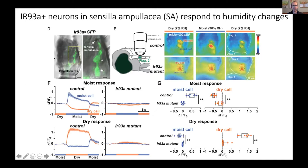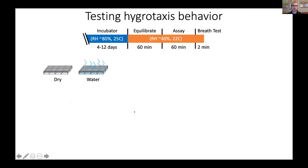With our genetic access using the QUAS system, we can drive genetically encoded calcium indicators and do transcuticular calcium imaging — similar to what has been done in Chris Potter's lab — to monitor the response of these neurons when we apply airstreams of different relative humidities. For each sensilla ampullacea, you have two IR93A-positive neurons: one that responds to moist air, and one that responds to dry air and is inhibited in the opposite direction. Importantly, these responses are completely dependent on IR93A — in an IR93A mutant background, these responses go away.